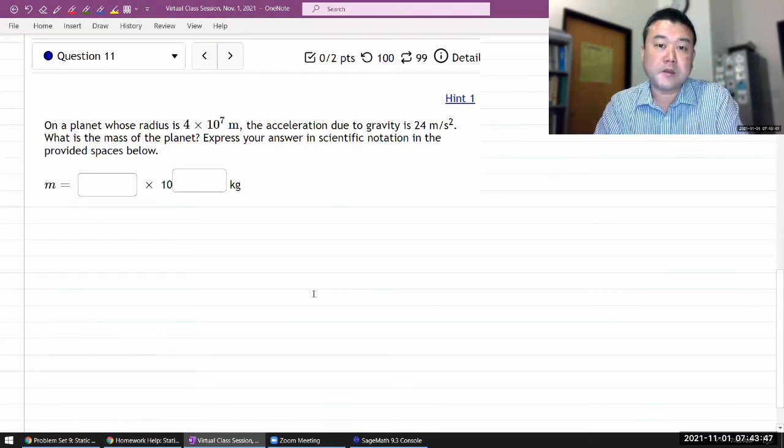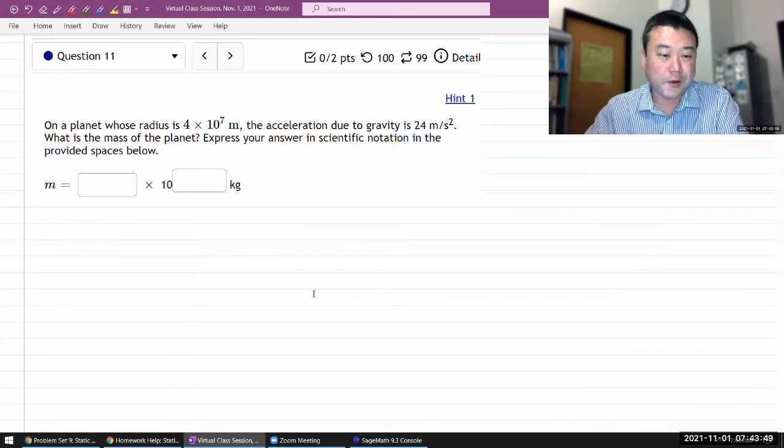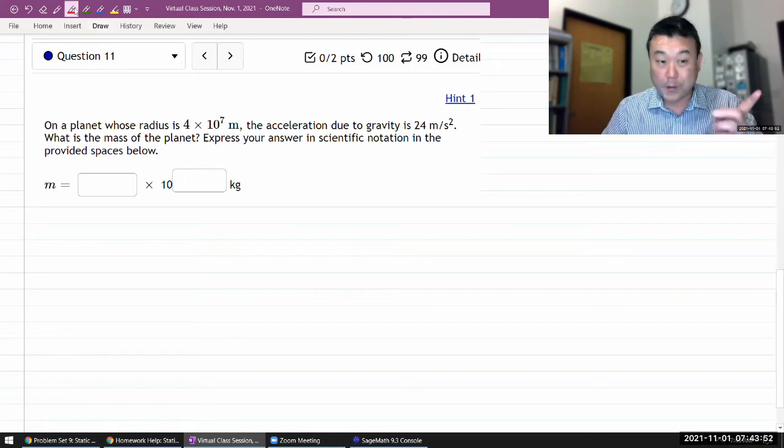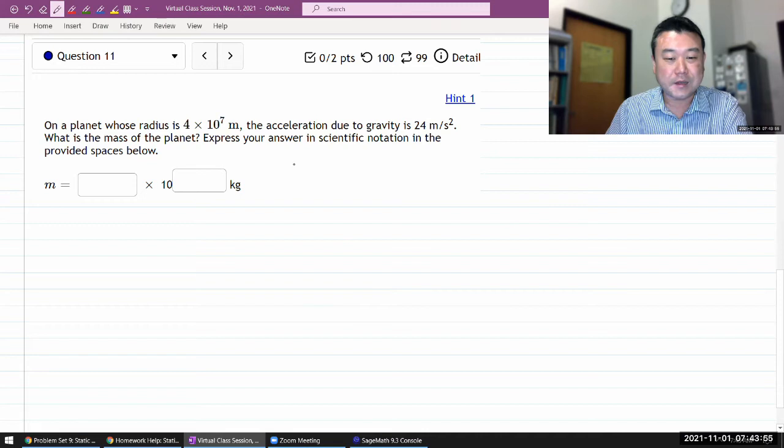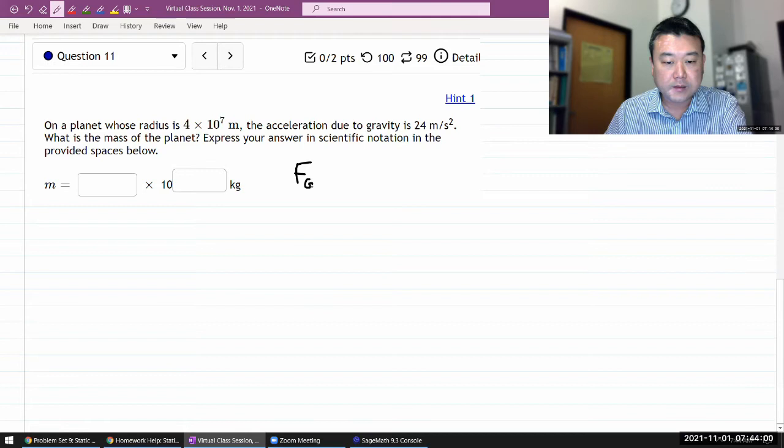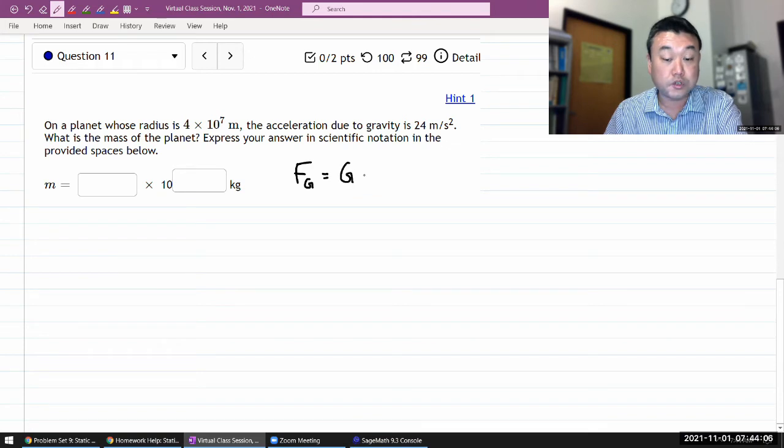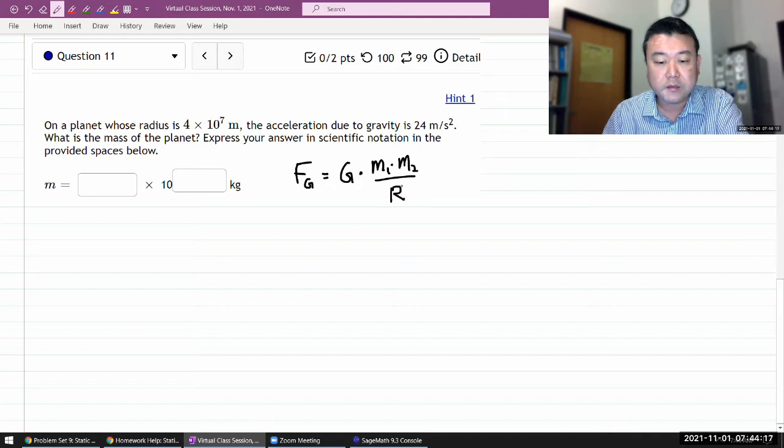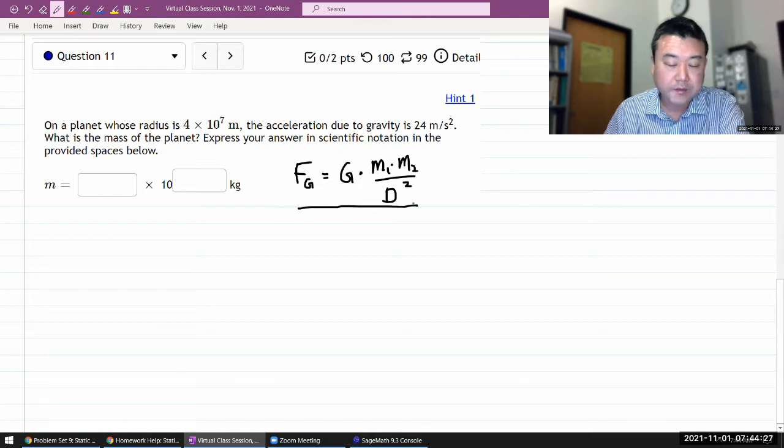Okay, so we are in the chapter on Newton's law of universal gravitation, and we introduce this formula for the gravitational force. The magnitude is equal to the constant G, a universal constant, times the product of masses m1 times m2 divided by distance squared. This is the expression that we are working with.